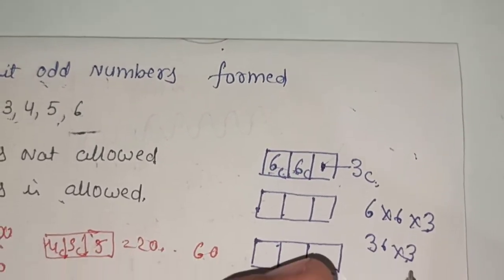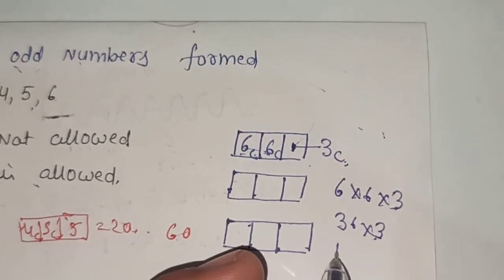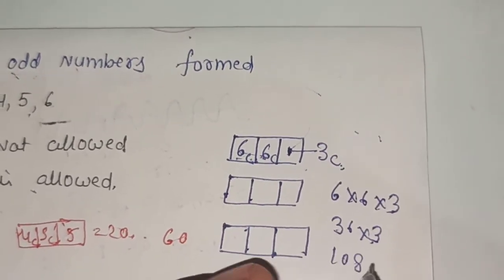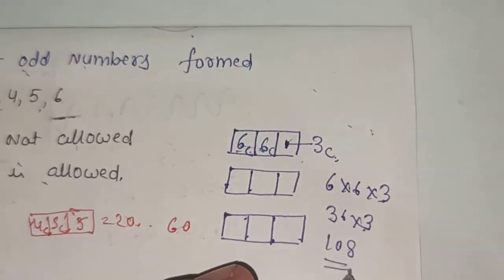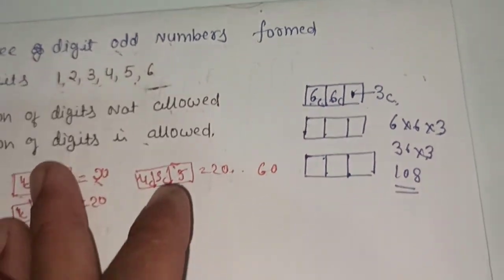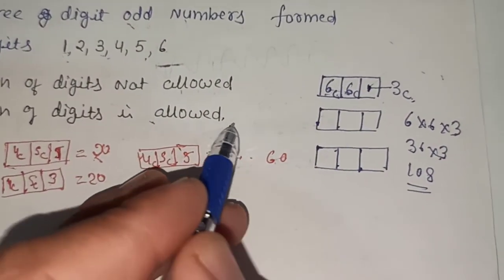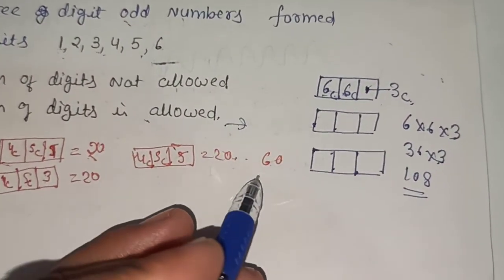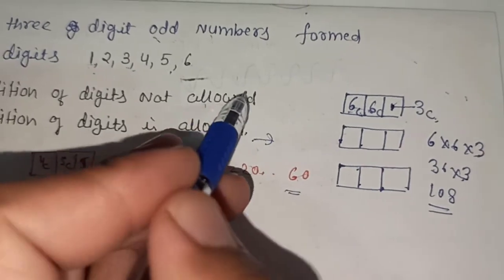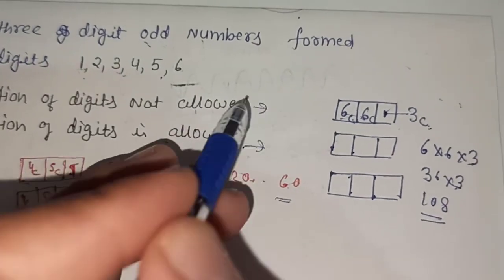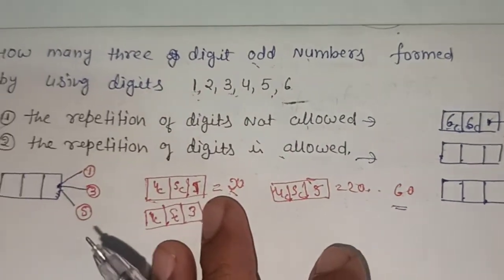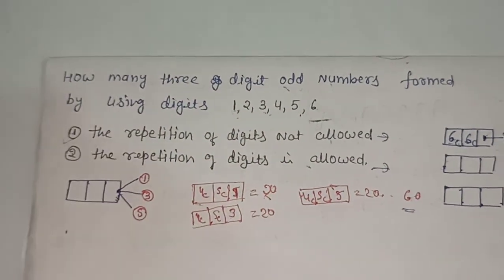So the total is 6 × 6 × 3 = 108 numbers when repetition is allowed. To summarize: 108 numbers are possible when digits can be repeated, and 60 numbers are possible when digits cannot be repeated.